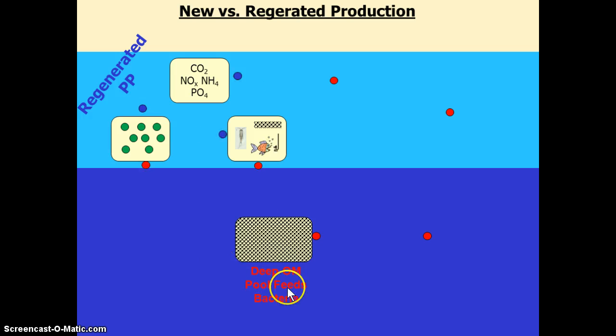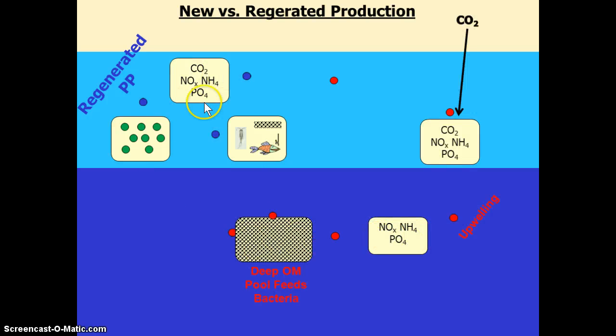Now before it makes it to the sea floor, it becomes a deep organic matter pool, which feeds deep prokaryotes. So if these prokaryotes take up this organic matter, they're also going to excrete and regenerate nutrients. But now they're removed from this surface system. Once they're removed from the surface system, their nutrients they regenerate can in some instances...